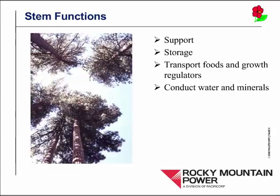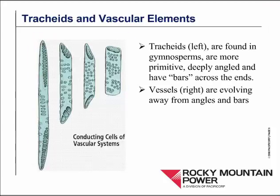Stems have other functions as well — they support the tree, they store carbohydrates, they are responsible for transporting carbohydrates and growth regulators, and they conduct water and minerals. The wood of the tree is made up of xylem. Xylem, among other things, is comprised of vascular cells — hollow conducting cells called tracheids in gymnosperms and vascular elements in angiosperms. You might think of them as hollow conducting cells that are stacked one on top of another. Notice also that they are perforated, among other things to allow the radial movement of water inside the wood.